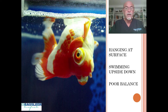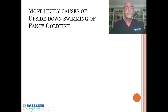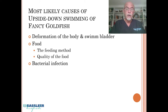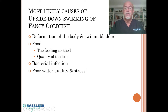The fish, like in this picture, hang at the surface. They're swimming upside down and have very poor balance — this is the typical symptom we see. Most likely, the causes of upside down swimming in fancy goldfish include a deformation of the body including the swim bladder, food and feeding method, bacterial infection, poor water quality, and stress.